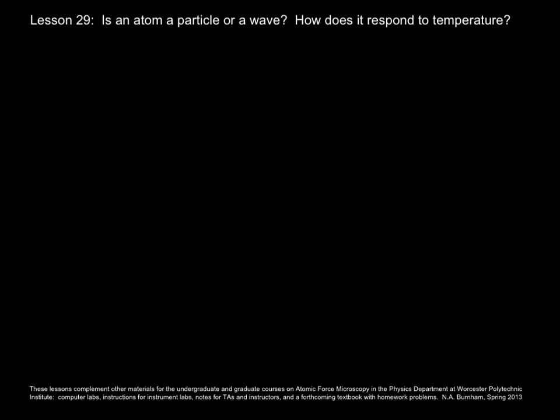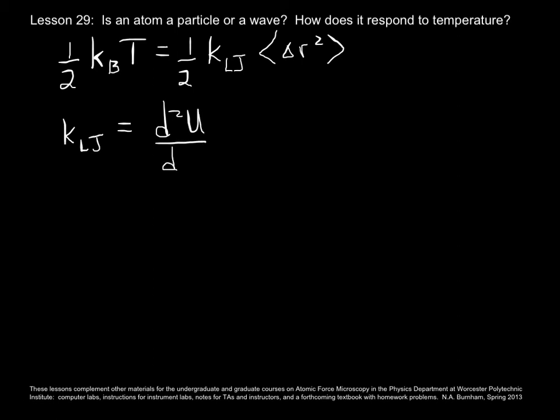Okay, we are after delta r. We're going to use the equipartition theorem, which states that thermal energy is equal to kinetic energy, and in this particular case we also want to use the term that it's equal to potential energy. And that's the spring stiffness, and now mean square delta r. And we need to look at what that spring constant is for the Lennard-Jones potential. If you remember back when we were talking about potentials, I said that the spring constant is the second derivative of the potential evaluated at the equilibrium position.